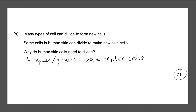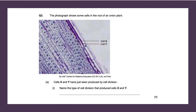Next question: the photograph shows some cells in the root of an onion plant. Cells X and Y have just been produced by cell division. Name the type of cell division that produced cells X and Y. Looking closely at cells X and Y, you can tell that they are identical, and the cell division used would be mitosis. That gives you your one mark.